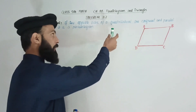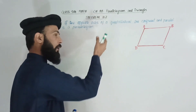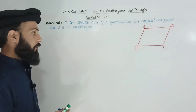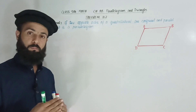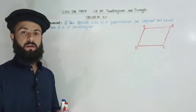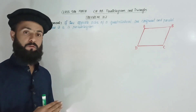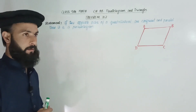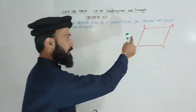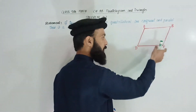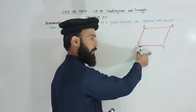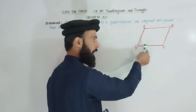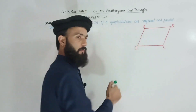First of all, the definition: a quadrilateral is a four-sided closed figure. In every four-sided closed figure, there is a quadrilateral. So this is quadrilateral ABCD — a closed figure with four sides.